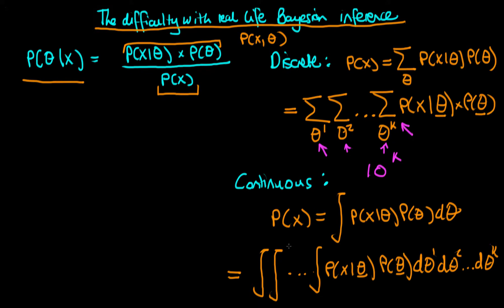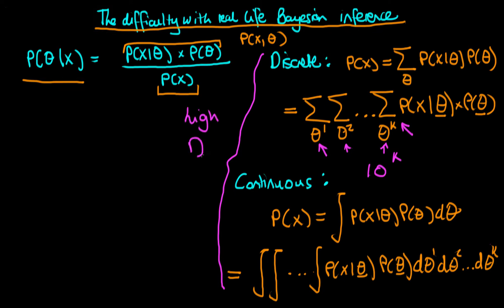In the continuous case, there usually isn't an analytic form that exists for these multidimensional integrals, so we have to approximate them in some way. One approach is to discretize the posterior, which we'll discuss next. But when we discretize the posterior, we run into the same sort of problems as the discrete denominator case — there are just too many terms to evaluate.